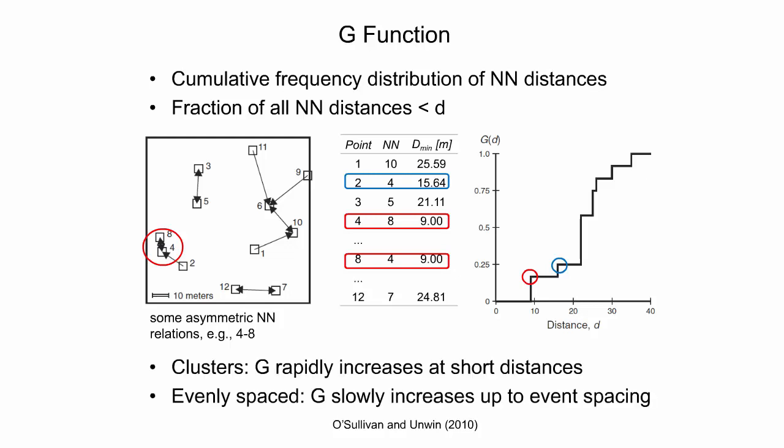The shape of the g-function provides information about the way events are distributed in a point pattern. If events are closely clustered together, g increases rapidly at short distances. If events tend to be evenly spaced, g increases slowly up to the range of distances at which most events are spaced, and only then increases rapidly. In the given point pattern, g increases most quickly in the 20 to 25 meter range, since many of the nearest-neighbor distances are in that distance range.